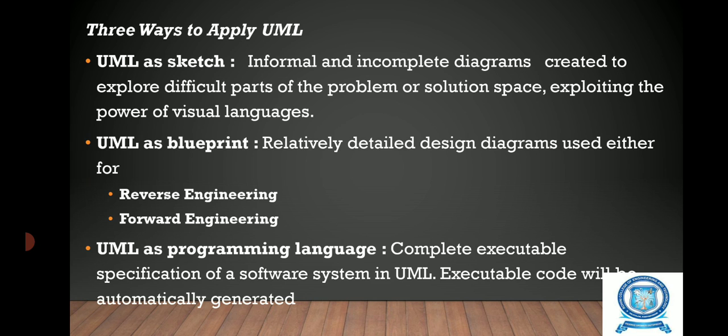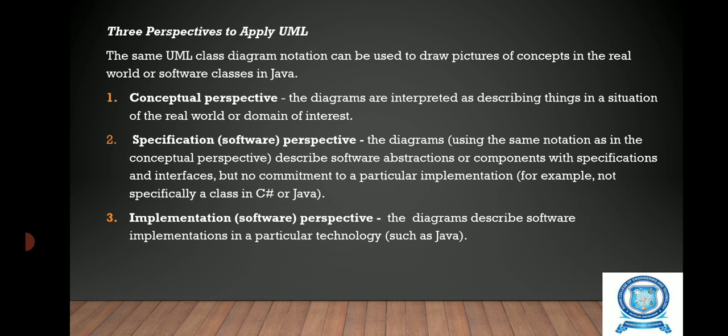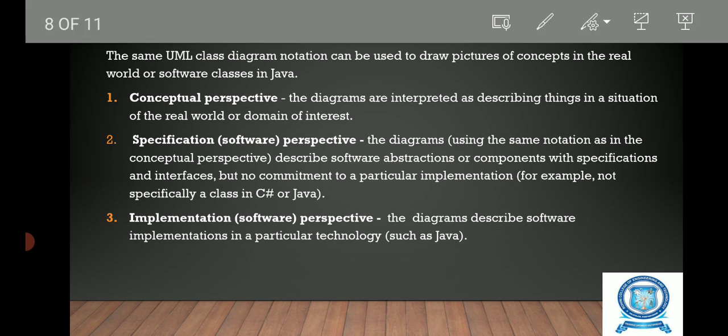There are three ways to apply UML. First, UML as a sketch — informal and incomplete diagrams created to explore difficult parts of the problem or solution space, exploiting the power of visual languages. Second, UML as a blueprint — a relatively detailed design diagram used for either reverse engineering or forward engineering. Third, UML as a programming language — a completely executable specification of a software system in UML, where executable code is automatically generated.